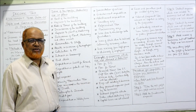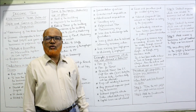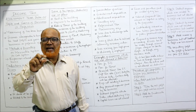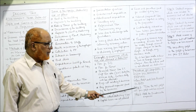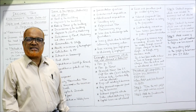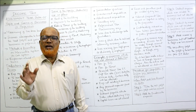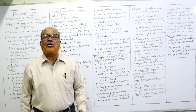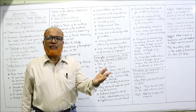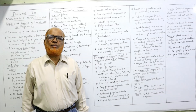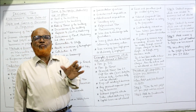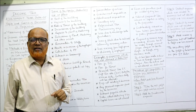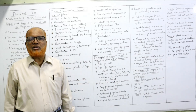Now the computation procedure for computing income from business or profession. Normally a profit and loss account is given in the problem. Step 1: Take the net profit as per the profit and loss account. Step 2: Add back inadmissible expenses — these are expenses which are not allowed by the Income Tax Act but have already been debited to the profit and loss account. Examples: provision for doubtful debts, provision for income tax, salary of the proprietor, and interest on capital — these items are not allowed but are already debited, so we add them back.